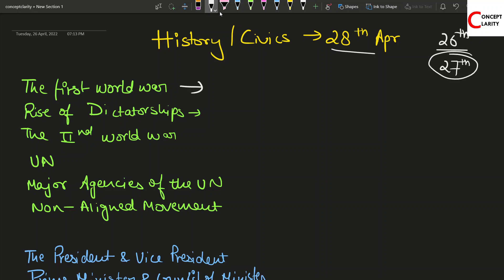For history, you can start at 11. For the first world war, you can prepare from 11 to 11:30 max. Then in rise of dictatorship you have only one last paragraph, the difference paragraph, which will hardly take 15 minutes. Then in the second world war you can again take another half hour or 45 minutes. Max to max, you can finish the world war chapters by 1:30 PM.